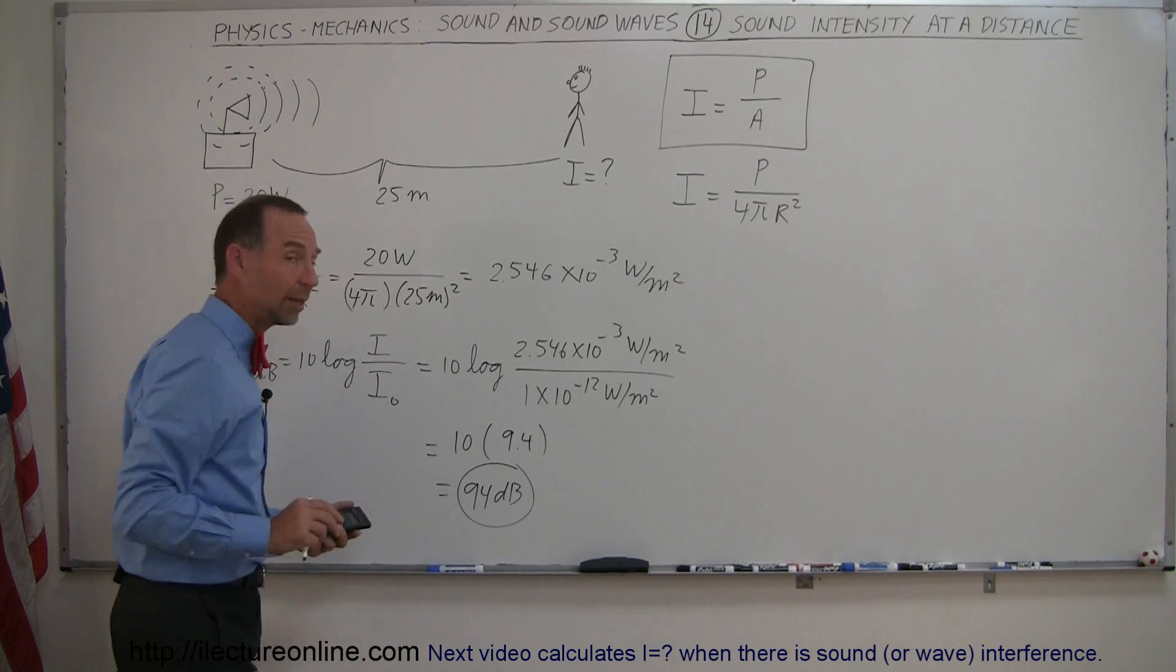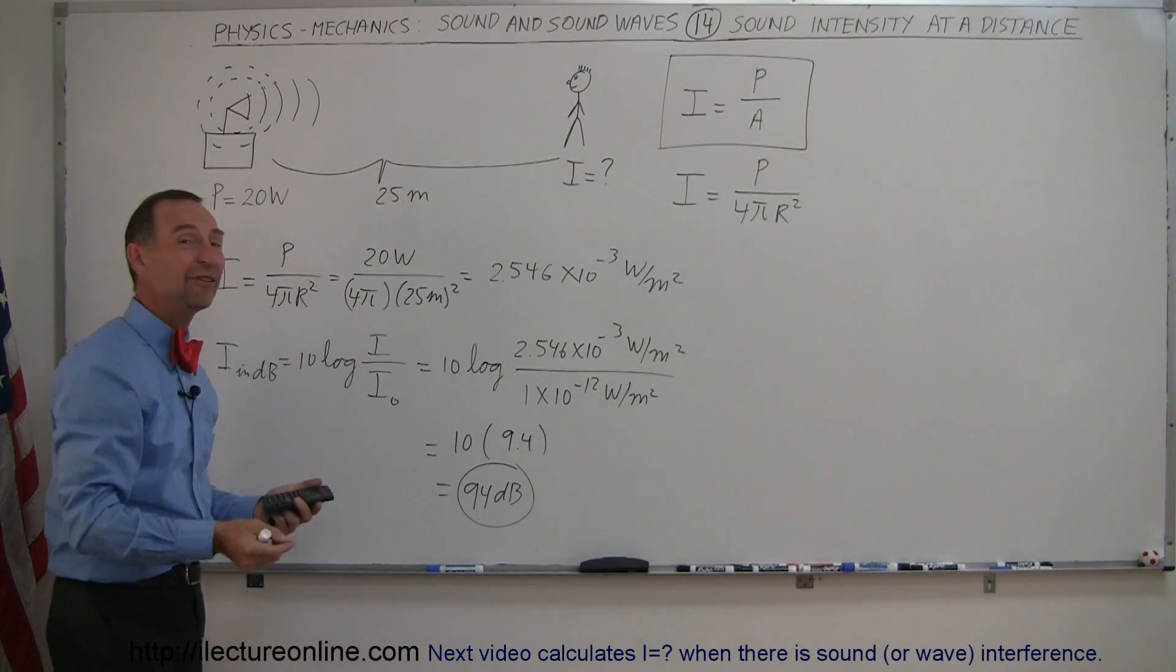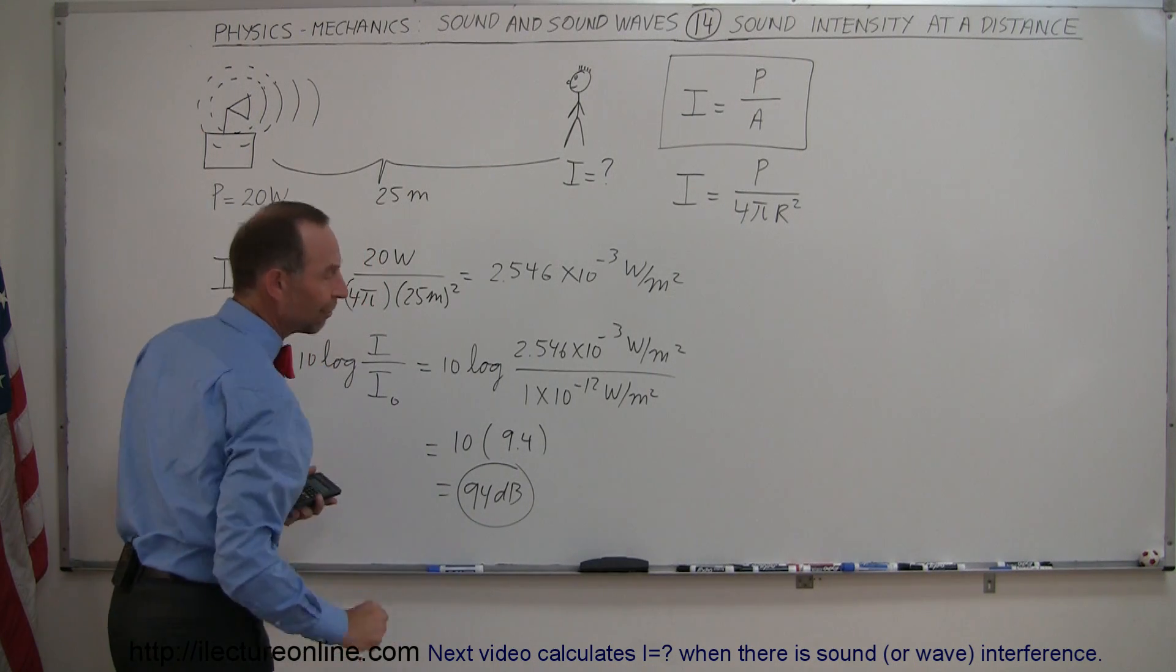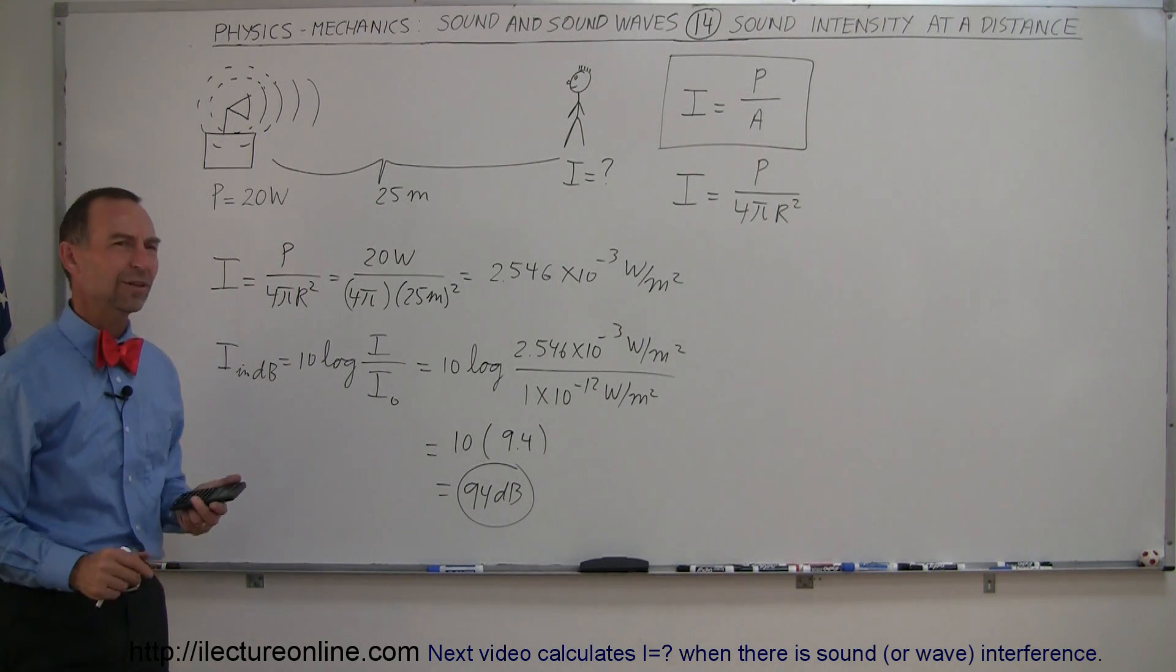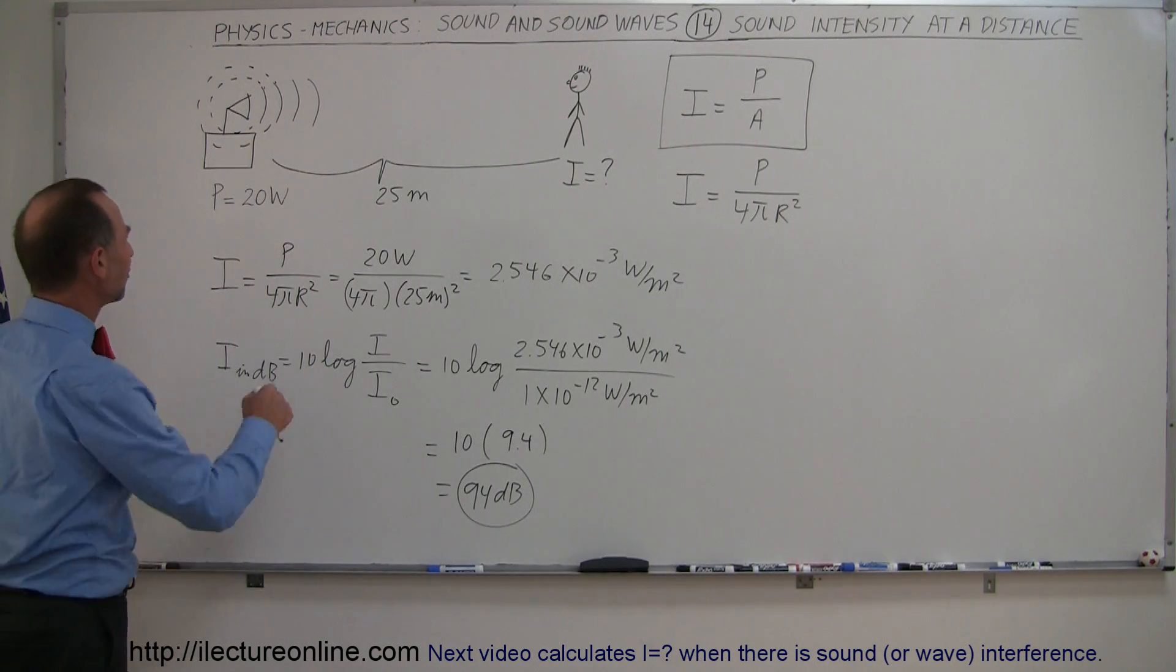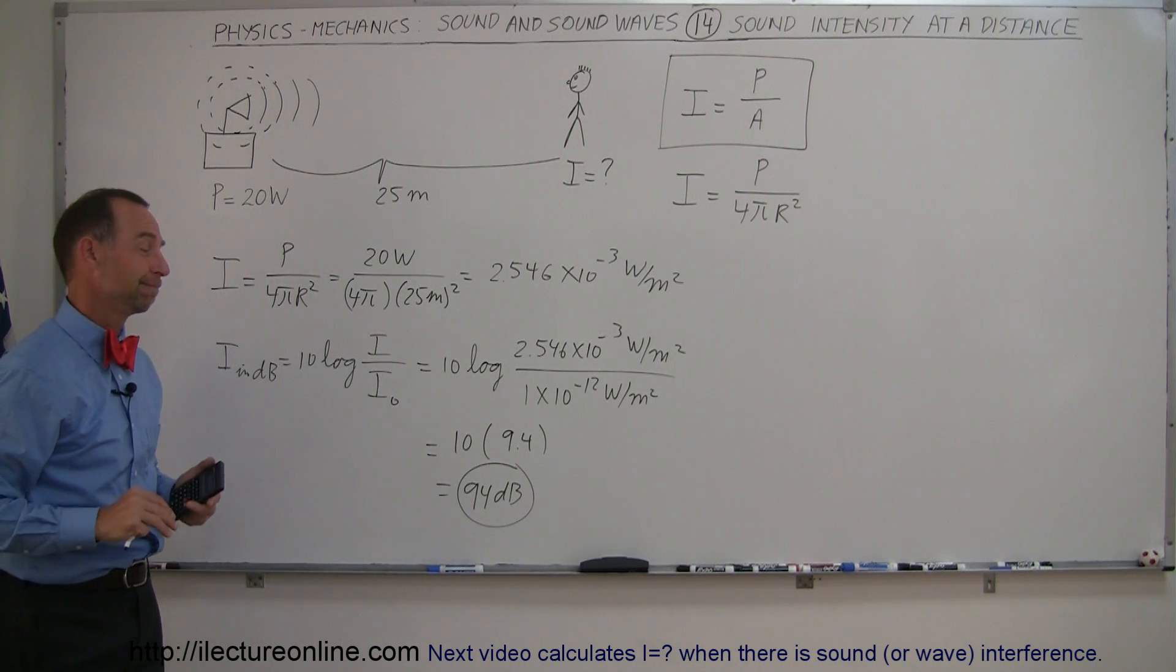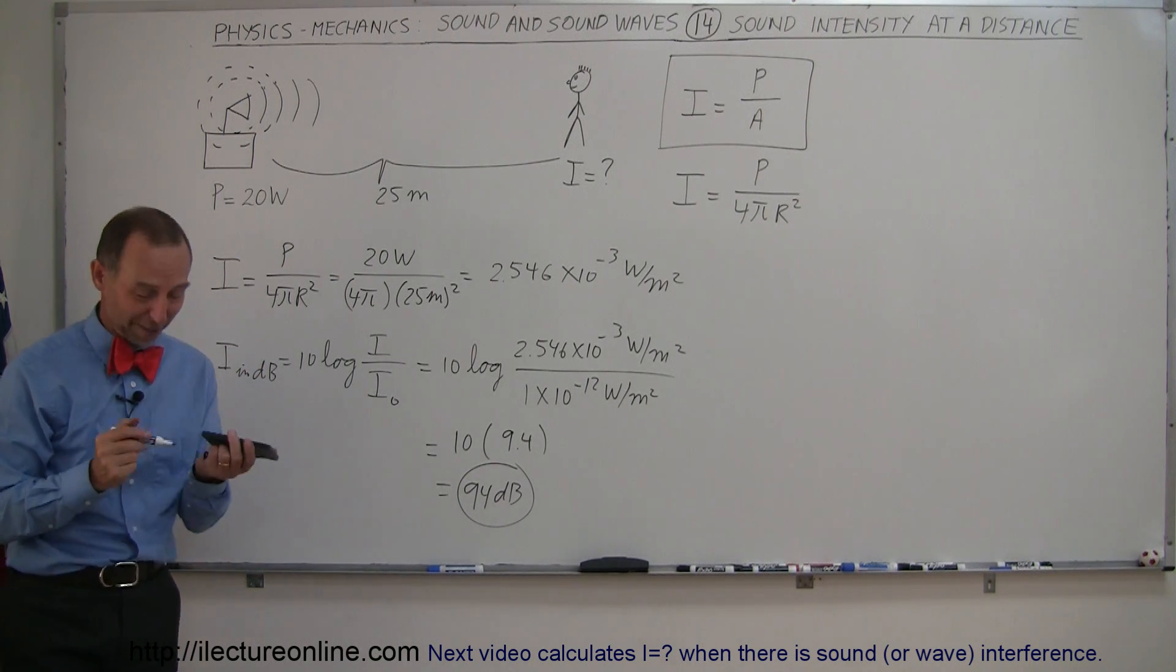So a person standing 25 meters away, which is about 80 feet or so, from a source that puts out 20 watts will hear a sound intensity of 94 decibels. Hmm, I wonder what a person hears when they're in one of those cars that have speakers that put out 3,000 watts and you're just a few feet away from it. A lot more than 94 decibels. I wouldn't want to be in that car. Alright, that's how you do that.